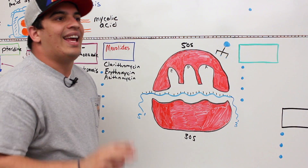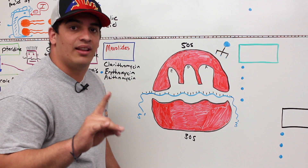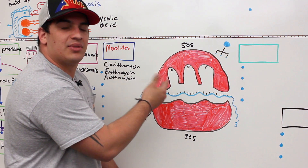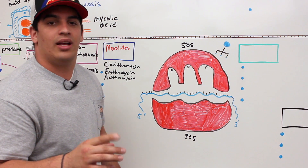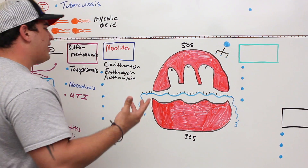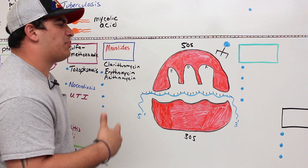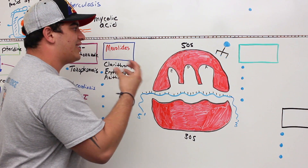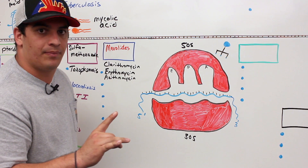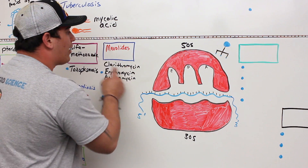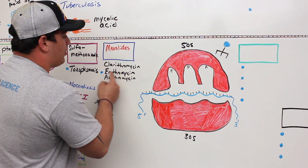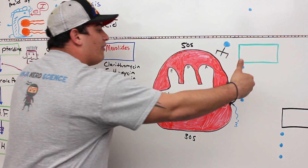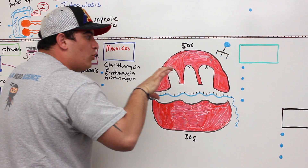If the ribosome can't synthesize a functional protein, that causes a lot of different problems. Importantly, macrolides are not bactericidal — they're bacteriostatic. Bacteriostatic means they inhibit specific cellular functions without directly causing cell death. So clarithromycin, erythromycin, and azithromycin are bacteriostatic, preventing the ribosome from moving along the mRNA to make proteins.